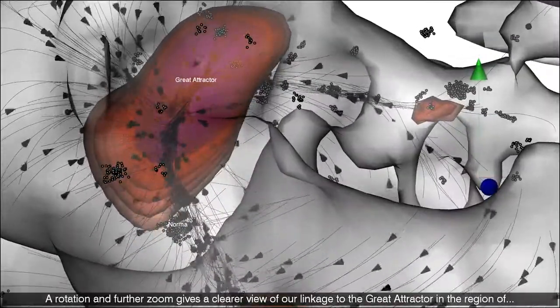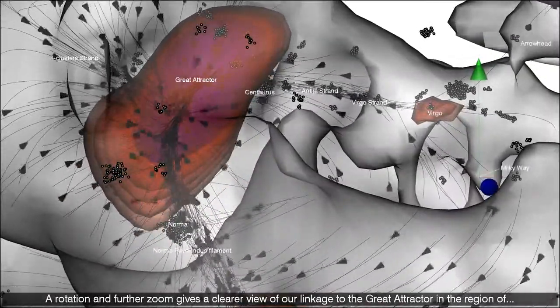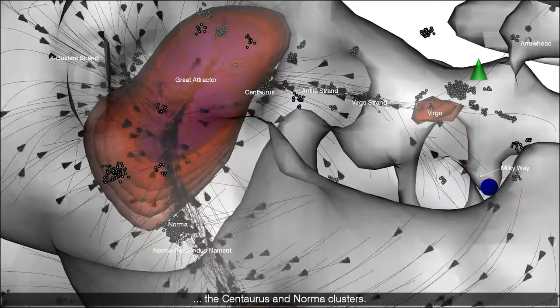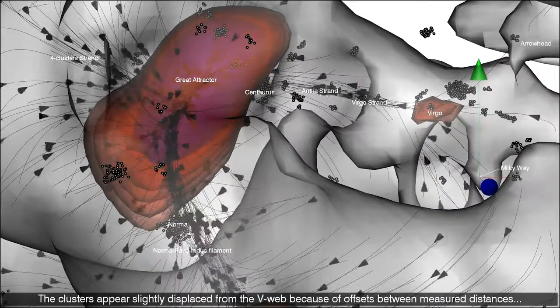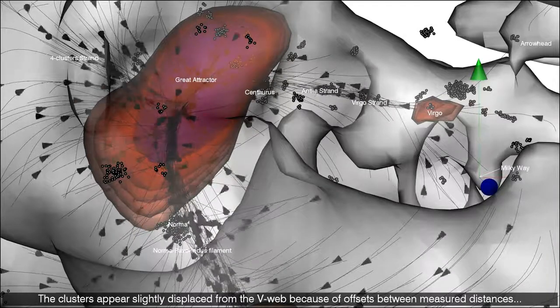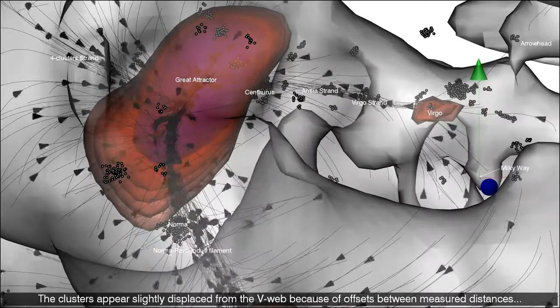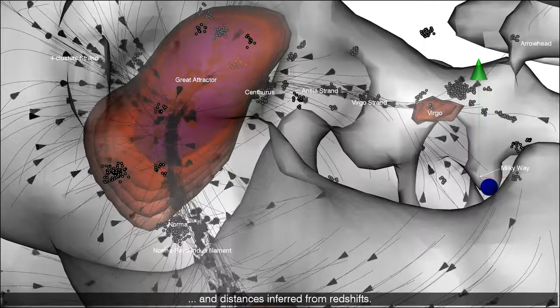A rotation and further zoom gives a clearer view of our linkage to the great attractor in the region of the Centaurus and Norma clusters. The clusters appear slightly displaced from the V-web because of offsets between measured distances and distances inferred from redshifts.